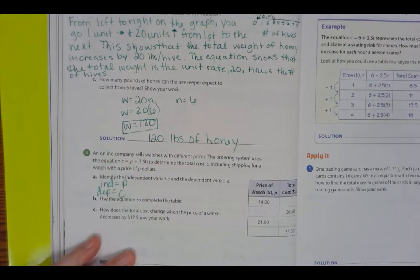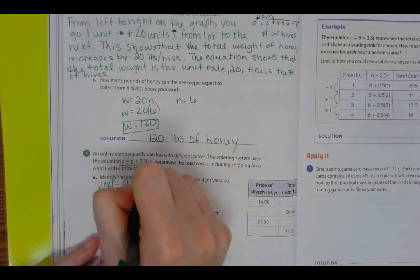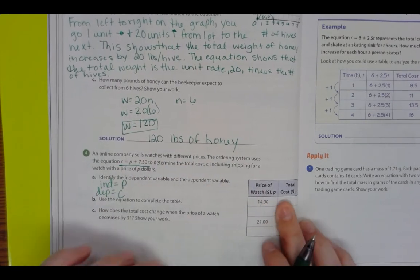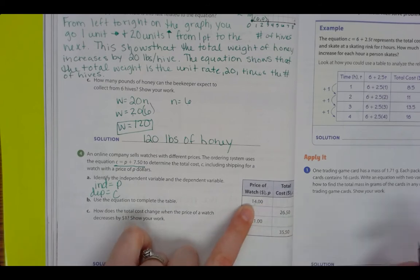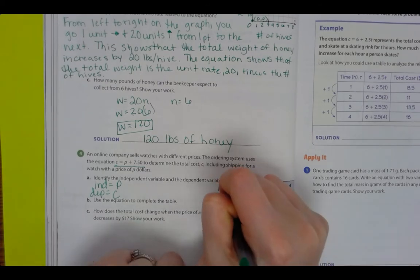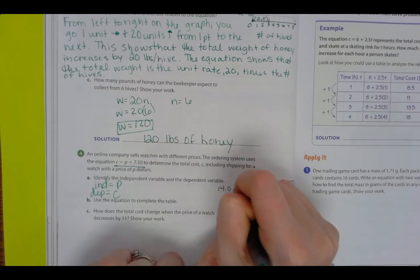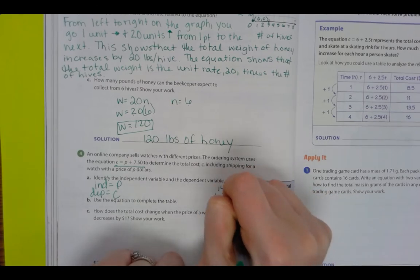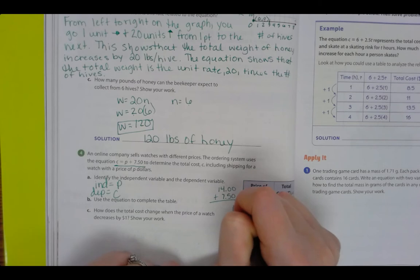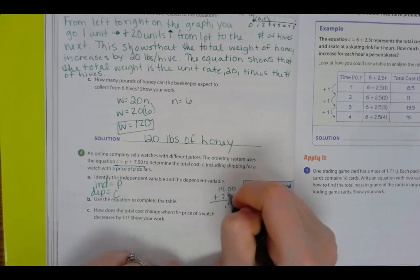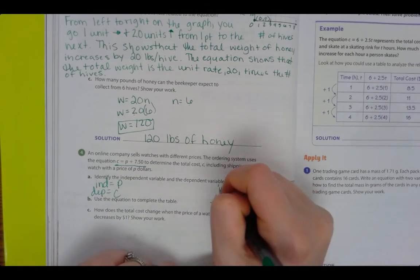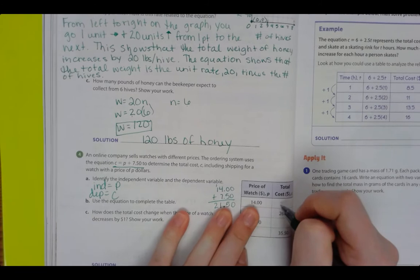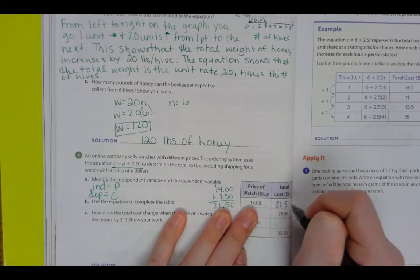Use the equation to complete the table. So we're given the equation C equals P plus $7.50. So 14.00 plus $7.50. 5 plus 0 is 5, bring down my decimal, 7 plus 4, and then 1 plus 1 is 2. So I get $21.50. So first blank.